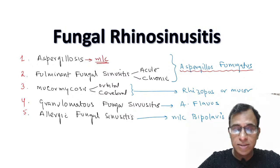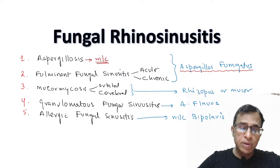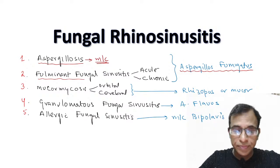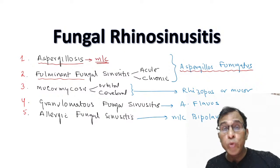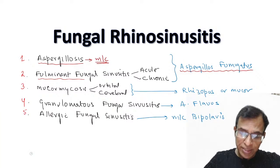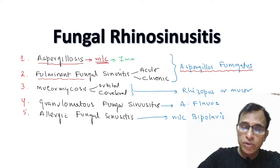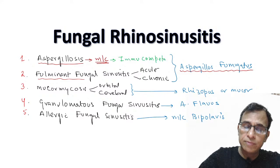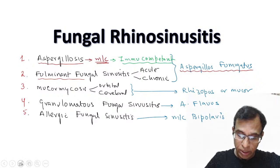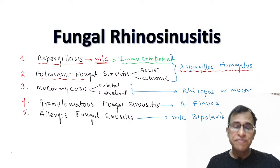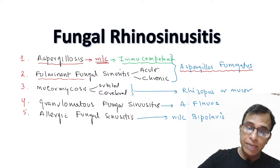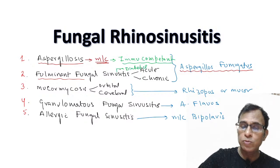So why do some people get aspergillosis and others get the more dangerous fulminant fungal sinusitis if the fungus is the same? This largely depends on the immunity of the person — whether the patient is immunocompetent or immunocompromised. If the patient is immunocompetent, with no diabetes, no steroids, no COVID, they tend to have aspergillosis. Fulminant fungal sinusitis is seen in immunocompromised patients, like diabetics.